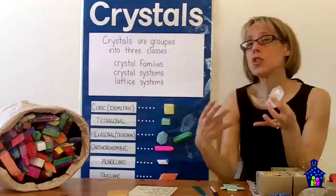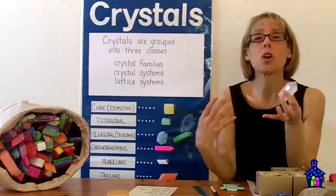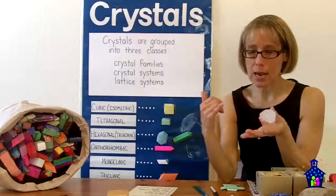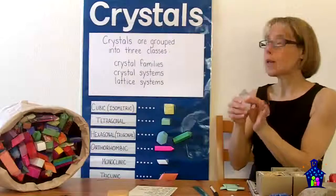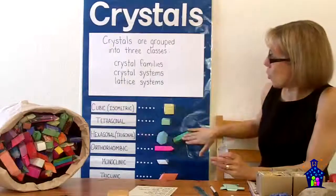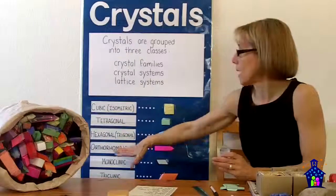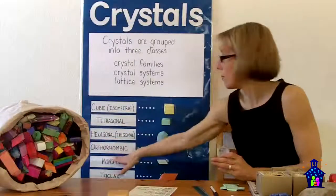And most geodes actually, the most common crystals found in them are quartz, celestite, and calcite. So I wanted to make sure that I included the quartz in here. And those three, by the way, fall under the hexagonal, trigonal, and orthorhombic categories.